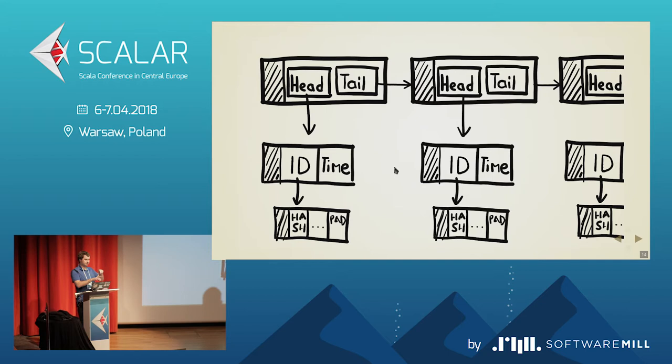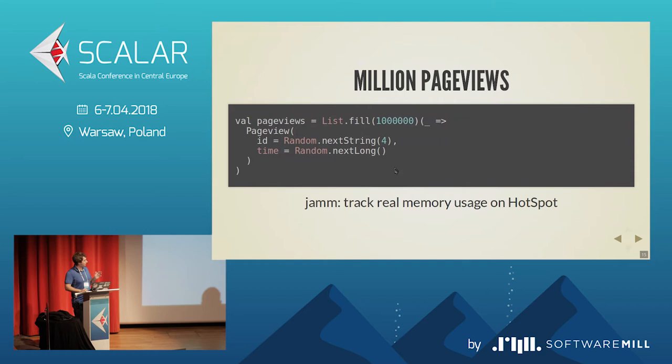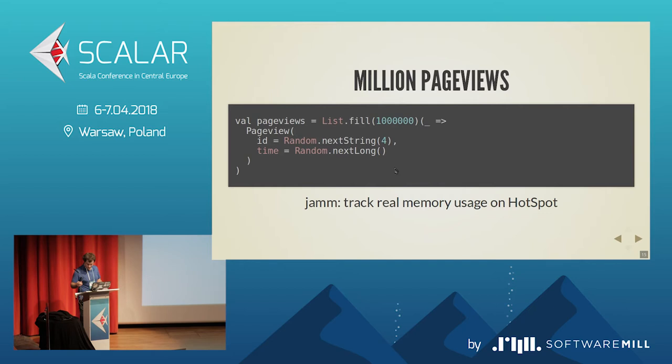If you try to use a collection of case classes, 80% overhead is still not the worst case. A Scala List is itself a case class with two references — to the head and to the tail — which itself is an object with padding and references. So a list of case classes is a very complex structure with references to each other, and all your objects are distributed non-sequentially over the heap.